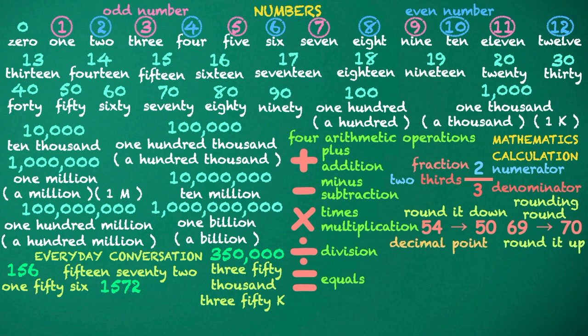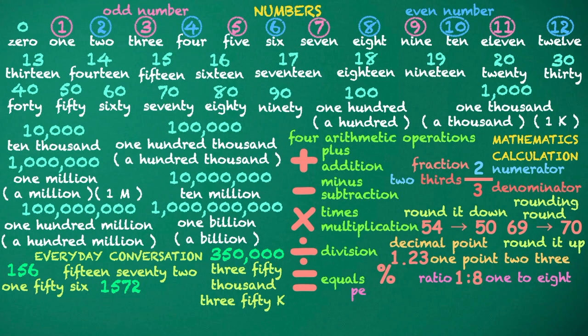Decimal point: 1.23. Ratio: 1 to 8. Percentage. Proportional, inversely proportional.